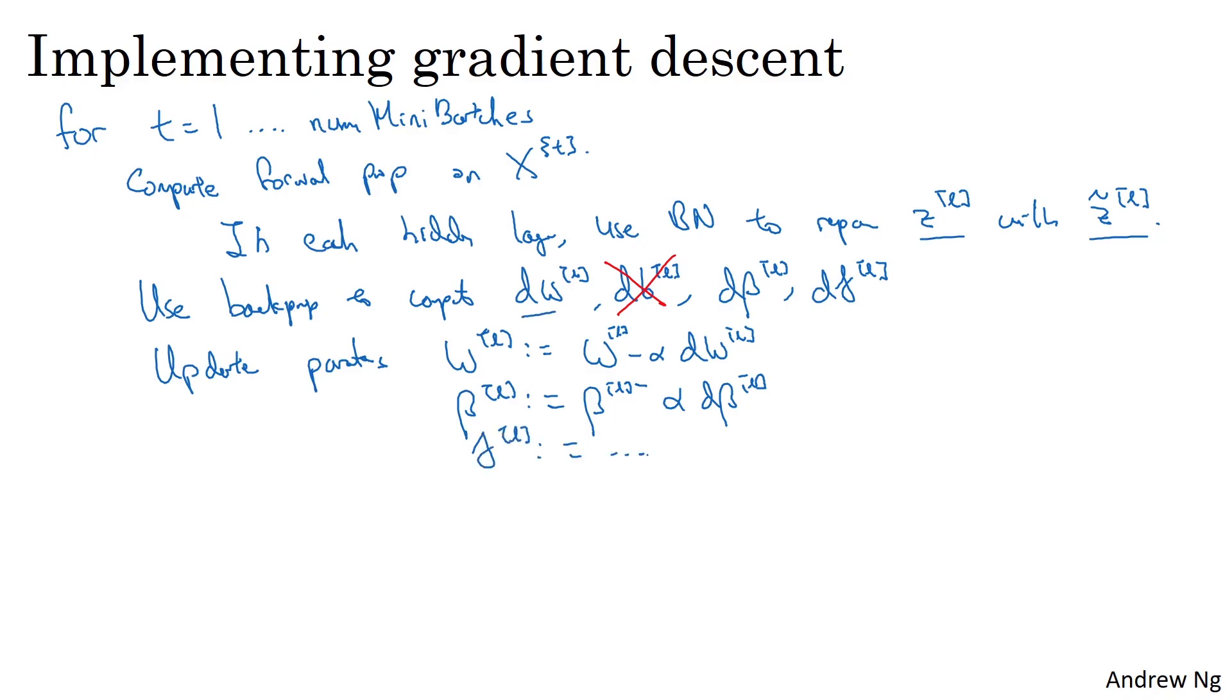And if you've computed the gradients as follows, you could use gradient descent. That's what I've written down here. But this also works with gradient descent with momentum or RMSprop or Adam. Where instead of taking this gradient descent update, you could use the updates given by these other algorithms as we discussed in the previous week's videos. So these other optimization algorithms as well can be used to update the parameters beta and gamma that batch norm added to your algorithm.